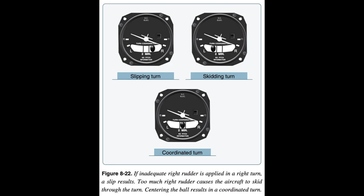The inclinometer is used to depict aircraft yaw, which is the side-to-side movement of the aircraft's nose. During coordinated straight-and-level flight, the force of gravity causes the ball to rest in the lowest part of the tube, centered between the reference lines. Coordinated flight is maintained by keeping the ball centered. If the ball is not centered, it can be centered by using the rudder.